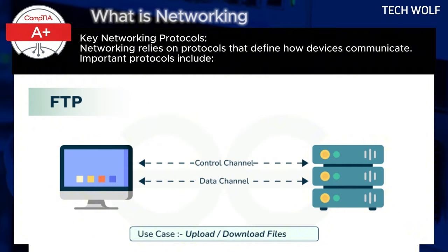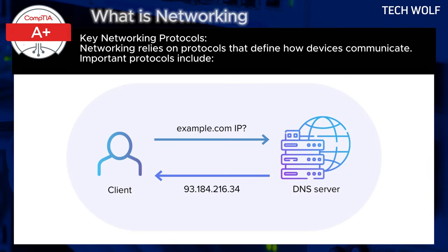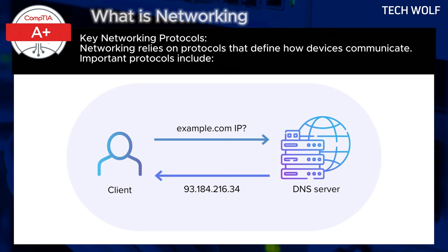FTP, or File Transfer Protocol, is used for transferring files between systems over a network. And DNS, or Domain Name System, translates human-readable domain names like www.example.com into IP addresses that computers can understand.